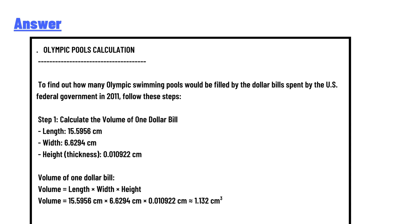Olympic pool calculation. To find out how many Olympic swimming pools would be filled by the dollar bills spent by the U.S. federal government, follow these steps. Step 1: Calculate the volume of one dollar bill. Length is 15.5956 centimeters, width is 6.6294 centimeters, and height (thickness) is 0.010922 centimeters.